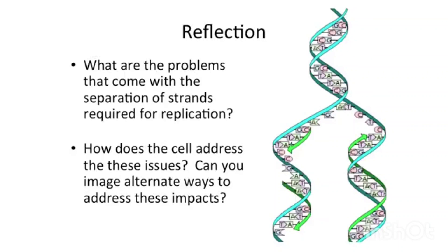What problems do you see that can come from the separation of strands required for the replication process? Think back to how the cell addresses these issues. Can you think of alternative ways to address the impacts of separating the strands?